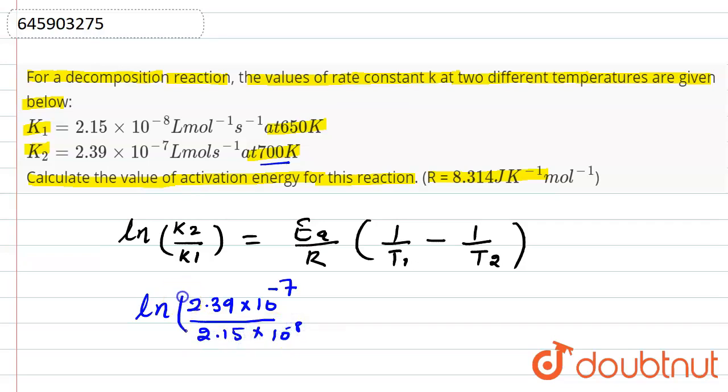And activation energy, that we have to calculate in this question. Value of R is also given, that is 8.314. And the T1 is given as 650, T1 is 650, and T2 is 700.